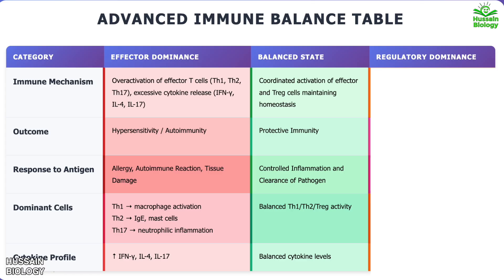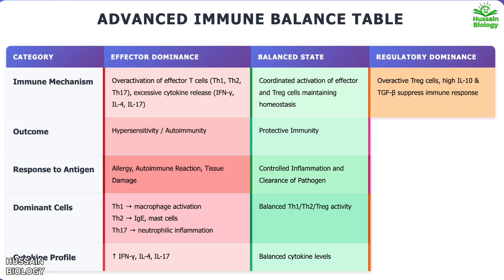On the other side, in regulatory dominance, instead of overactivation the immune system becomes too suppressed. Treg cells become overactive and start releasing high levels of IL-10 and TGF-beta, which inhibit effector T-cell functions. As a result, the immune system becomes weak, leading to immunodeficiency or chronic infections, and the response to antigen is poor.